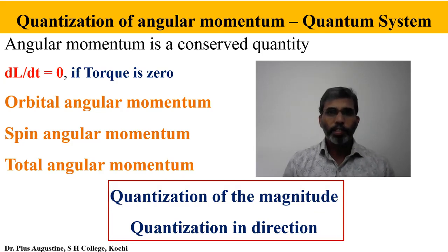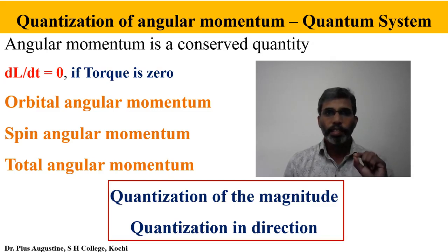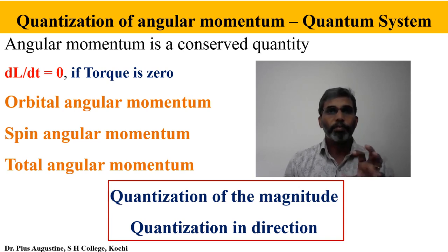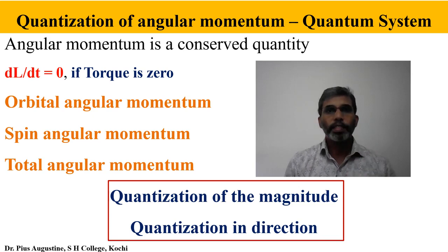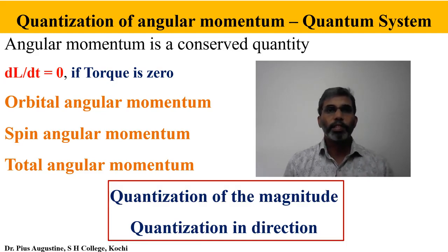For example, planetary motion is a very simple example to understand. In classical mechanics the study of angular momentum is very important — you have studied Kepler's laws of planetary motion, and one of those laws states that aerial velocity is constant, which is directly related to the concept of conservation of angular momentum. Similarly, electrons revolving around the nucleus form a quantum system where angular momentum again plays a significant role as a conserved quantity. We will restrict our studies today to electron motion around the nucleus.